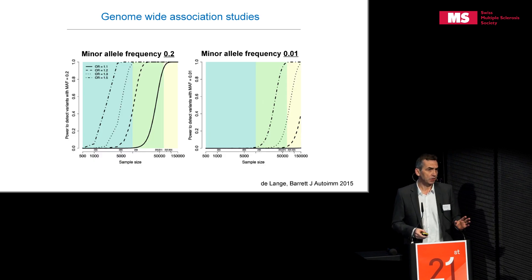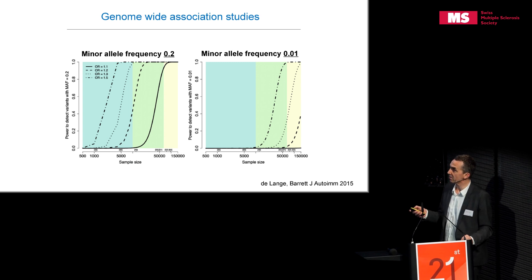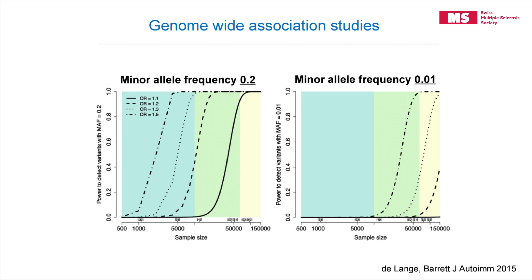Another important statistical issue relates to the frequency of the SNP. Variants present in 20% of the population are relatively easy to detect statistically. If a SNP is present in 20% of alleles and increases MS risk by 50%, you can detect it with about 1,000 people in a genome-wide association study with high power. If the effect is much lower — only a 10% increase — you need 30,000 to 40,000 patients to find something.